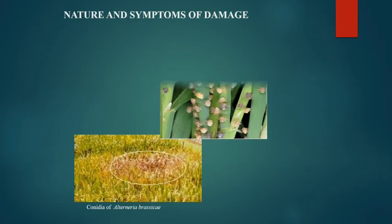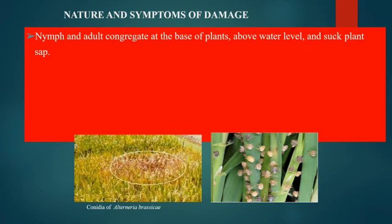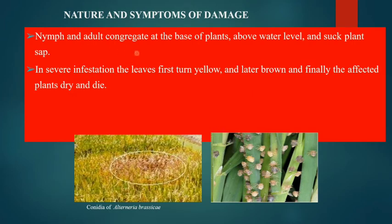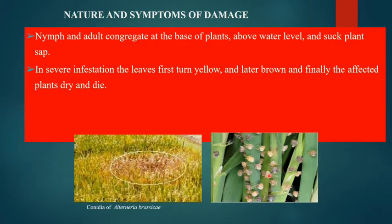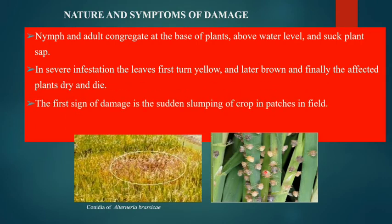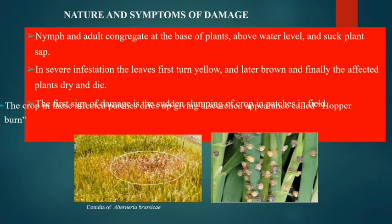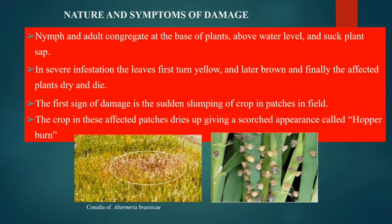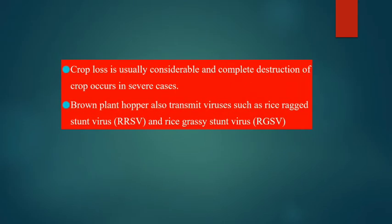Nymphs and adults congregate at the base of the plants, sucking sap from the rice plants. Initially the leaves turn yellow, later turning brown; affected plants dry and die. The first sign of damage is sudden slumping of the crop in patches of the field; the crop in affected patches dries up, showing a scorched appearance called hopper burn. Crop loss is usually considerable, and complete destruction can occur in severe cases.